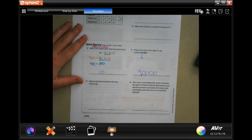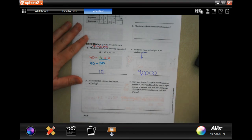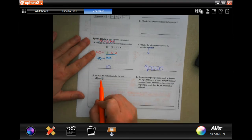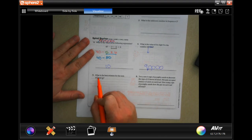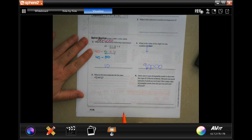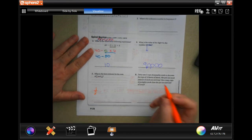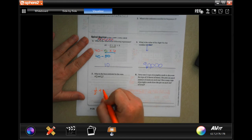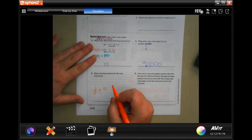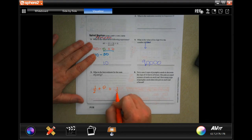What is the best estimate for the sum of three-eighths and one-twelfth? Well, three-eighths is about half, and one-twelfth is like the tiniest little bit, so I would just say one half.